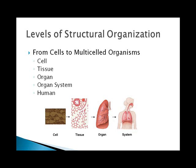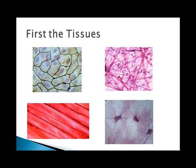We have four major types of tissues in our body: connective tissues, muscle tissues, nervous tissues, and epithelial tissues. Epithelial tissue is pictured on the upper left — that is simple squamous epithelium. Connective tissue is on the right — that is called areolar connective tissue. On the lower left is an example of muscular tissue, specifically smooth muscle, and on the right is nervous tissue, which consists of neurons and neuroglia or glial cells.